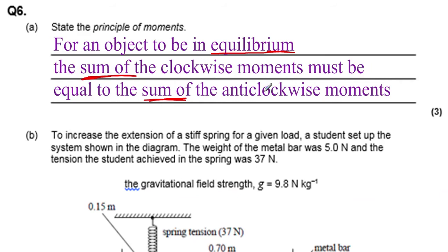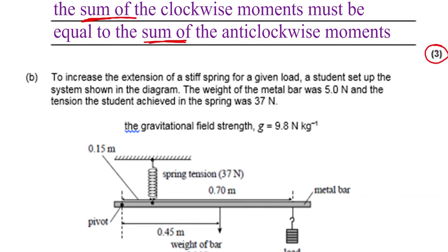If you just say clockwise has got to equal anticlockwise you get one mark, if you said the sum of them has to be equal to the sum of the anticlockwise, you maybe get two. And you also need to say that it's to do with objects being in equilibrium. Always look, it's A-level, see how many marks are required, it's three marks. Heavy stuff.